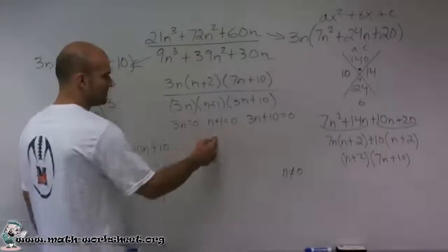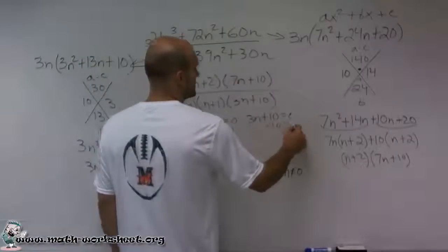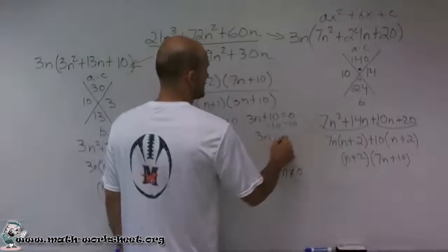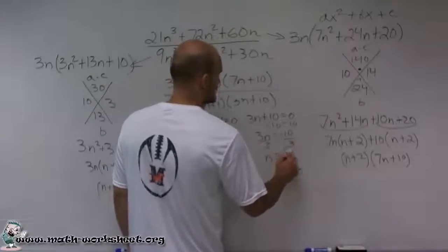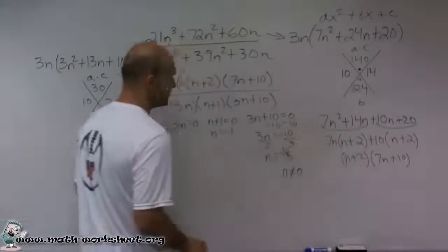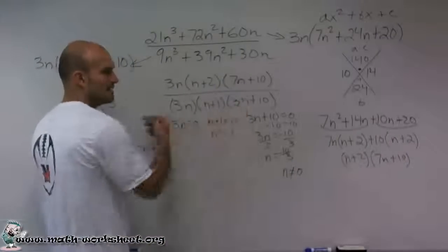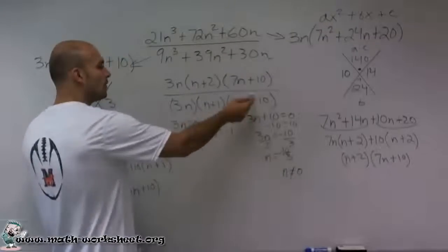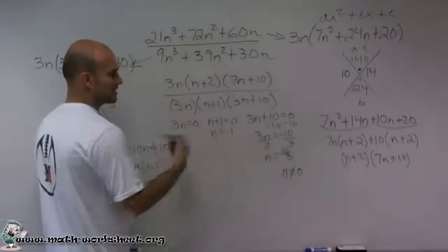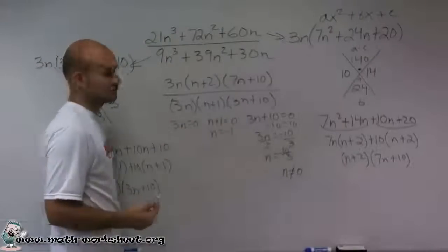So what I have here is n equals 0, n equals negative 1, and 3n equals negative 10, divide by 3, n equals negative 10 thirds. So what that means is if n equals negative 1, that's equal to 0, meaning the whole denominator is equal to 0. If n equals negative 10 thirds, that's equal to 0, meaning the whole denominator is equal to 0. And if n equals 0, that's 0, and the whole denominator is equal to 0.